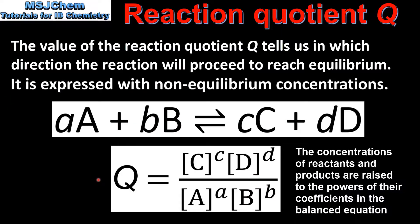Here we can see the expression for the reaction quotient Q for the above reaction. Similar to the expression for the equilibrium constant Kc, we have the products in the numerator and the reactants in the denominator.